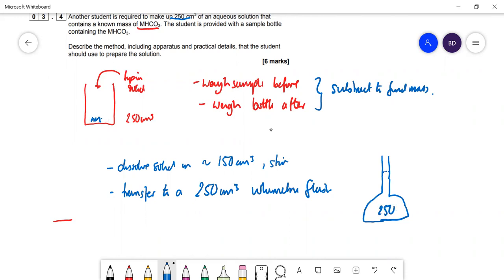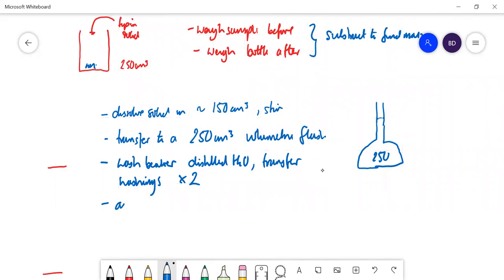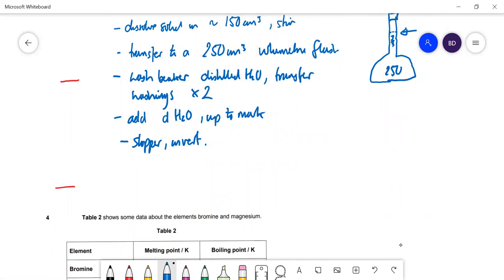Wash the beaker with distilled water and transfer the washings to make sure you've got all the solid. Do that at least twice. Then add distilled water up to the mark on the volumetric flask. Finally, really important, stopper the flask and invert it to mix.